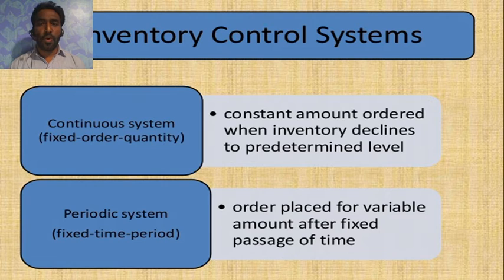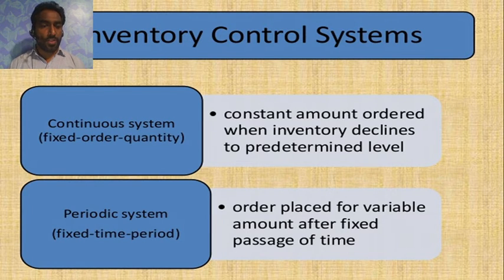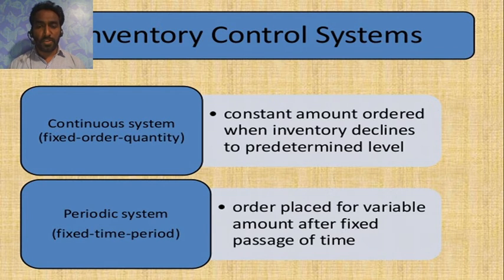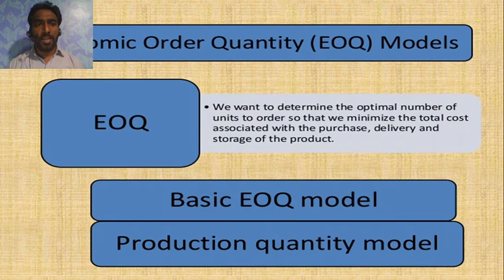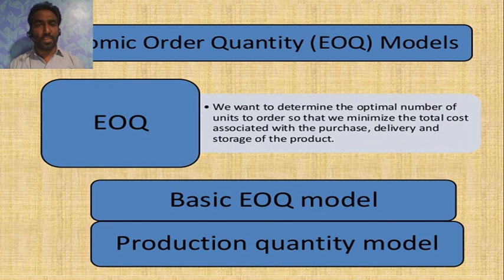Inventory control systems include the continuous system, which is a fixed order quantity system where a constant amount is ordered when inventory declines to a predetermined level, and the periodical system, where a fixed time period passes before placing an order for a variable amount.